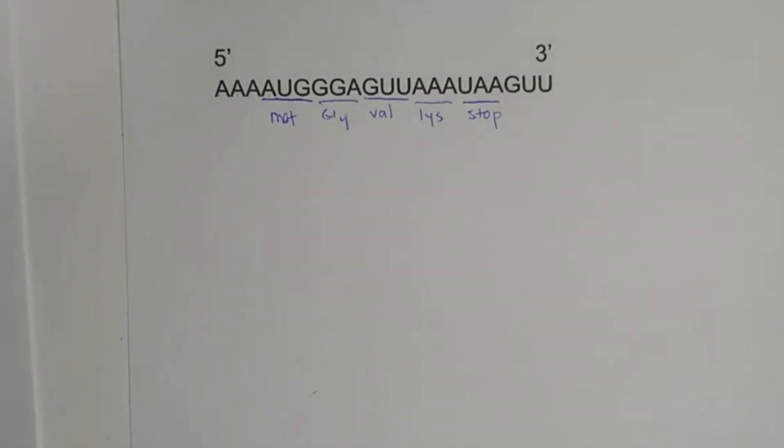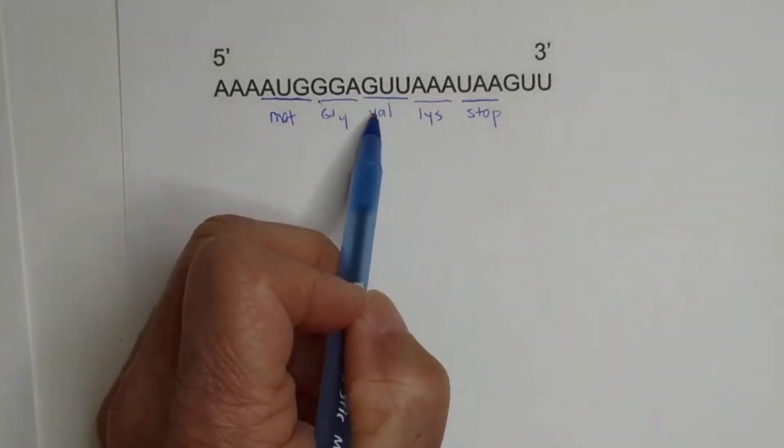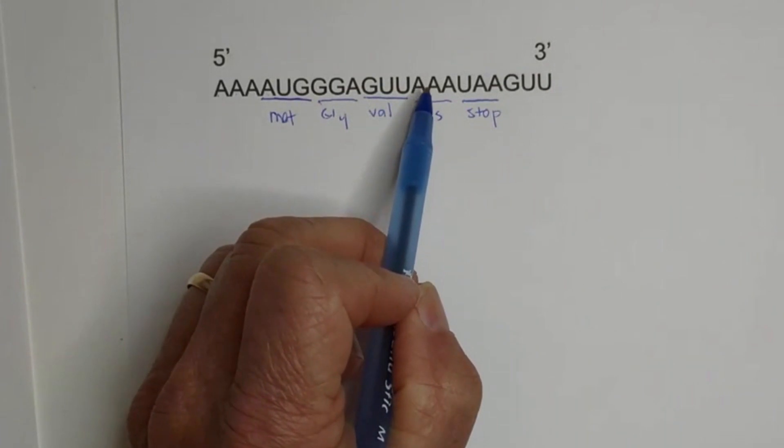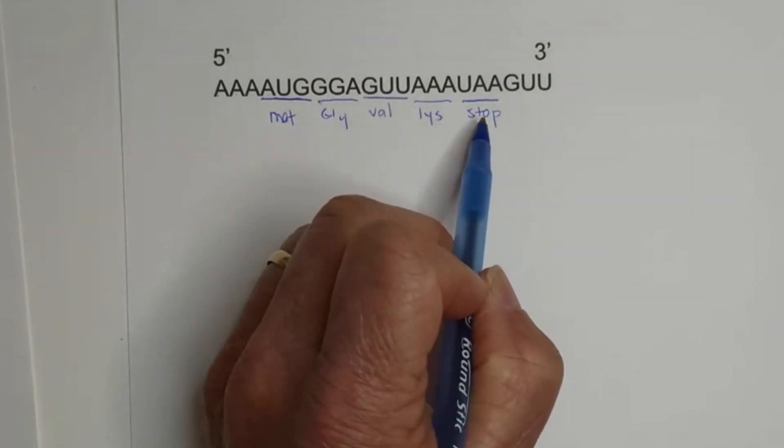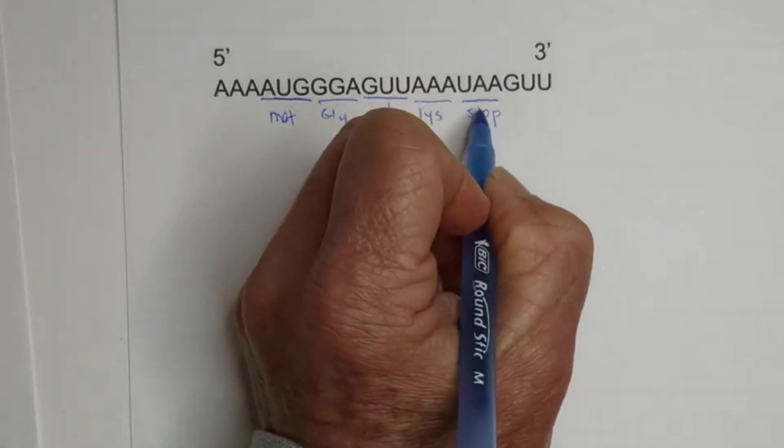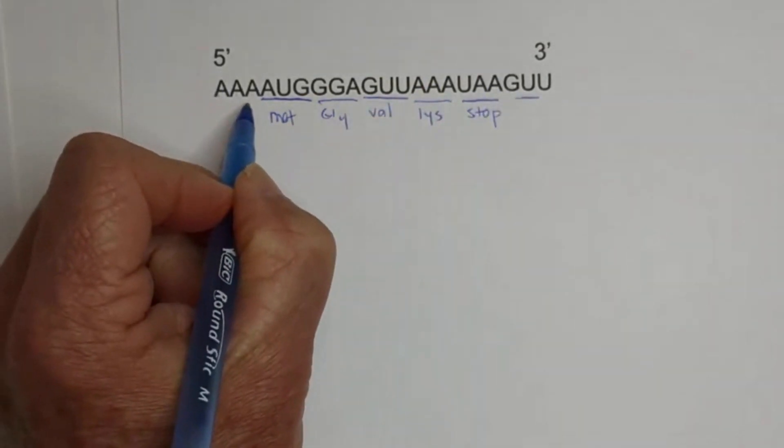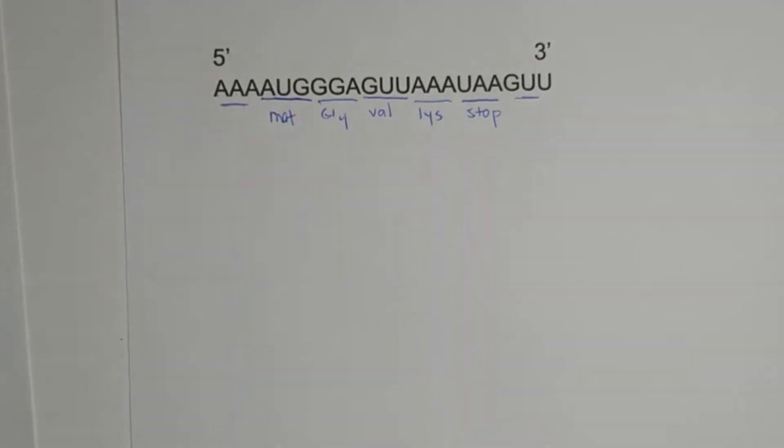Okay, so I went ahead and went through the rest. So we have GUU, then AAA is lysine, and then we get to our stop. Okay, so at this point, it stops. It's not going to read this, and it's not going to read that. Again, you're reading in triplets.